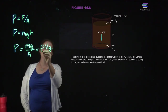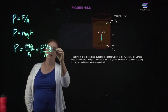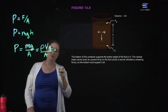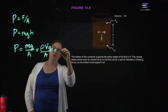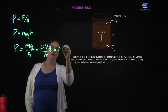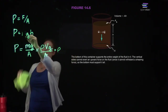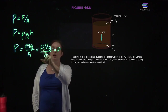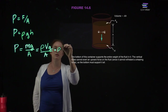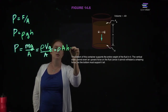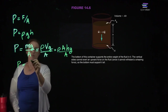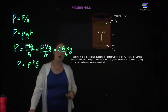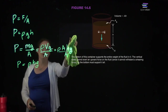The pressure equals rho times the volume — which is area times height — times g, divided by area. So we are left with pressure equals the density times the height times the gravitational constant: P = ρgh. The greater the height of fluid above you, the more pressure you are under.